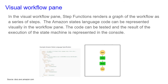In the Visual Workflow Pane, Step Functions render a graph of the workflow as a series of steps. The Amazon State Language code can be represented visually in the Workflow Pane. The code can be tested and the result of the execution of the state machine is represented in the console tool.